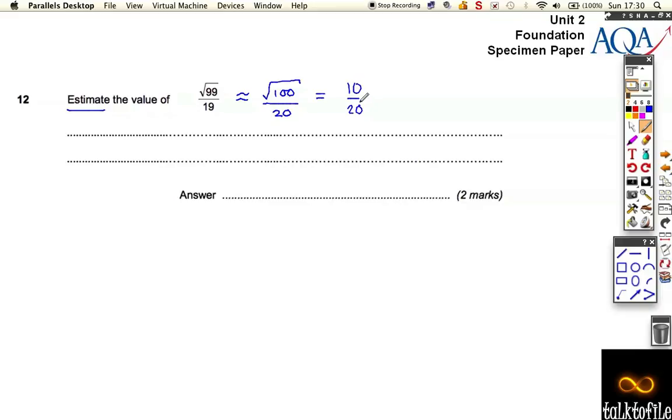I'm doing 10 divided by 20. 10 over 20 cancels down, gives me a half. Okay, nice and easy - straight two marks.